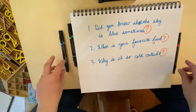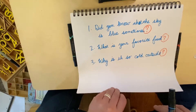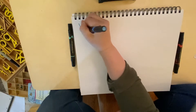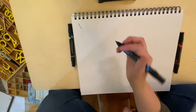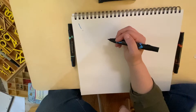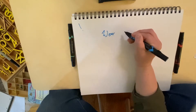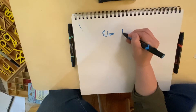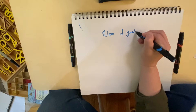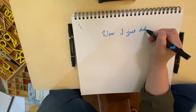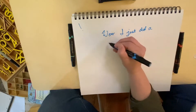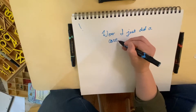The last thing I want to look at are exclamation marks. This is an exclamation mark — an upside-down I. These typically come after exclamations, when you're really excited. Like: wow, I just did a cartwheel!